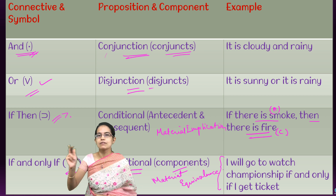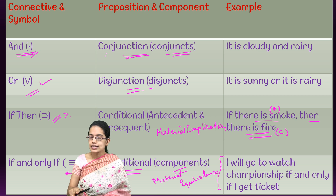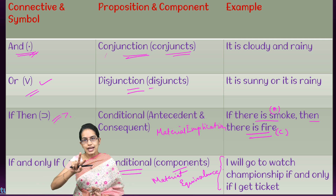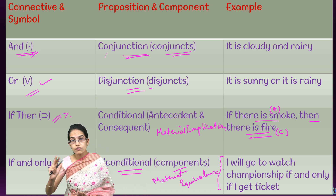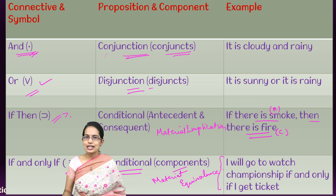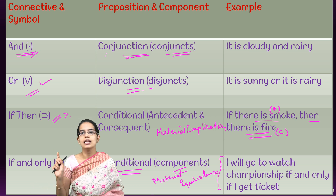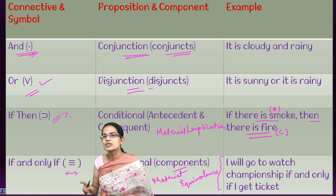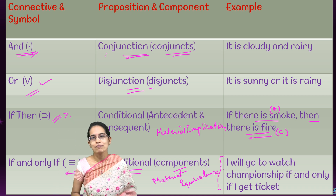So that is where we understand the four fundamental truth functional connectives: and, or, if-then, and if and only if, which is a bi-conditional — true only when both components are true or both are false. That was about truth functional connectives in logic. We will be covering many further interesting lectures in logic, so stay tuned for many simple examples and interesting sessions.